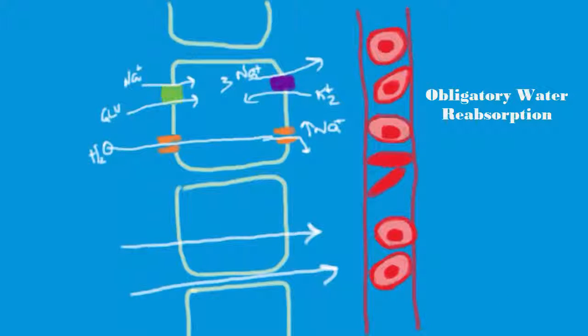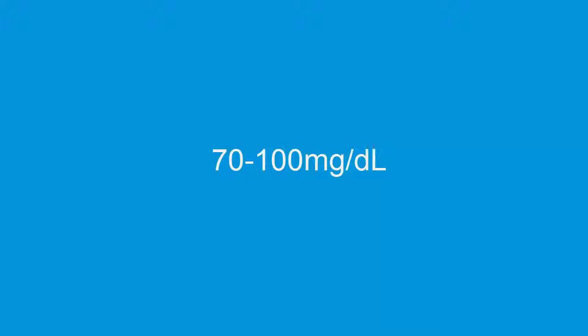This is not the case in other areas of the tubule, and we will revisit the aquaporin when we get to the collecting duct. In a healthy kidney, all glucose and amino acids are reabsorbed in the proximal convoluted tubule. This is especially important in relationship to glucose. In a healthy individual, glucose levels in the blood range between 70 and 100 mg per deciliter. At this concentration, there are plenty of glucose transporters in the apical membranes of the proximal convoluted tubule.